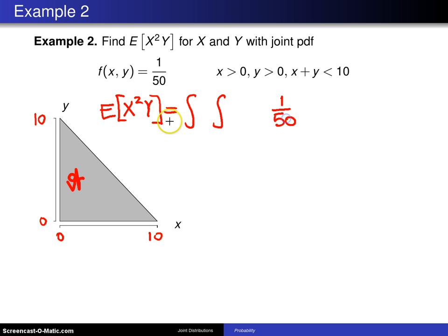You'll have 1/50 here, and then this x squared y simply gets copied right in here, x squared y. This will be dy dx. Because it's triangular, I can either go dy dx or dx dy. It doesn't matter. Either way is the same amount of work.